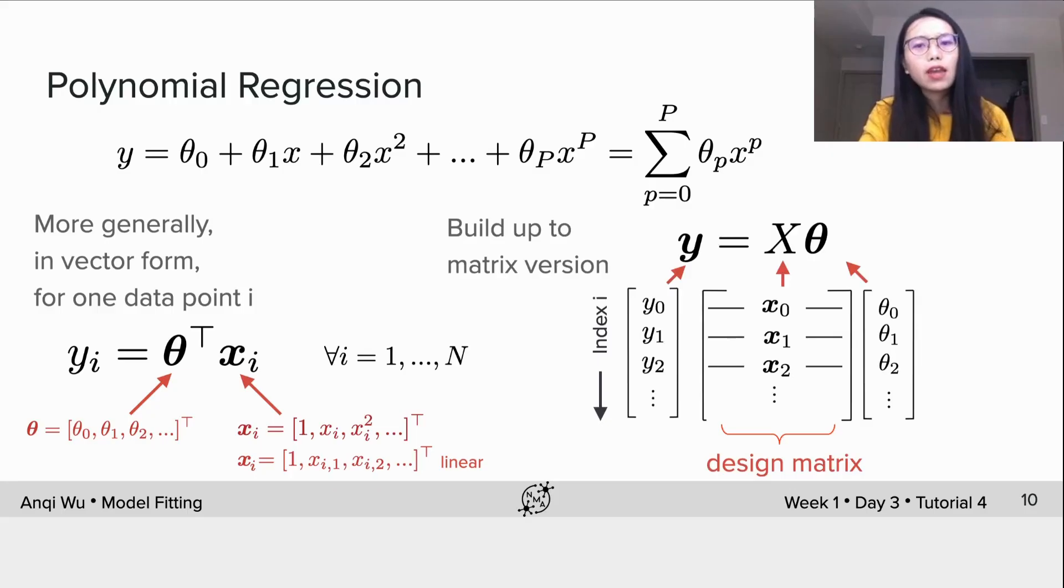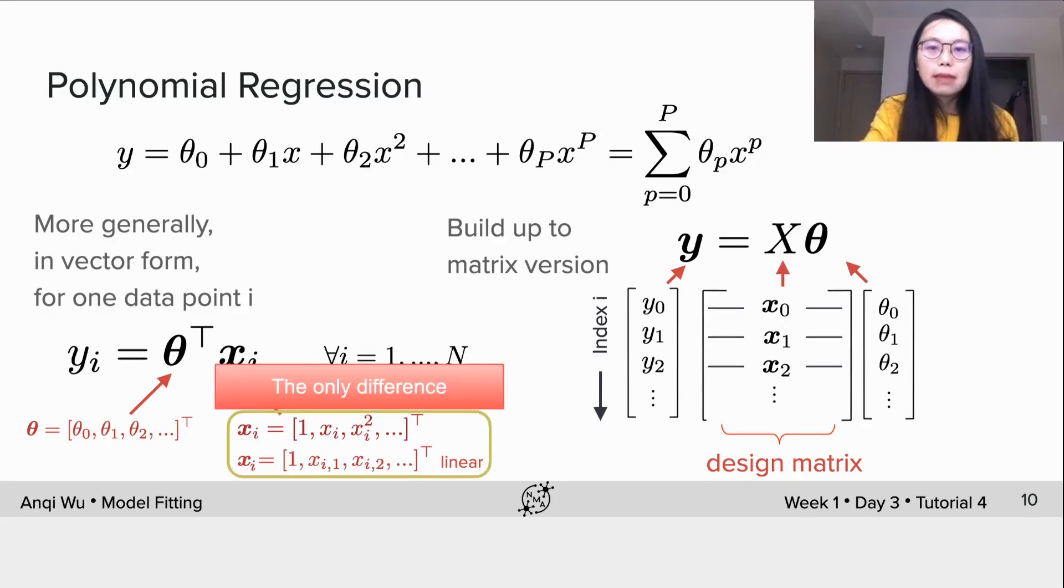So although we define a new polynomial regression model with non-linear powers, but the coupling between the weight theta and the inputs are still linear. The only difference is the input vector is now a collection of the same scalar feature x raised up to different powers. And thus, we can also use the same MSE and MLE estimators to estimate optimal theta for polynomial regression.